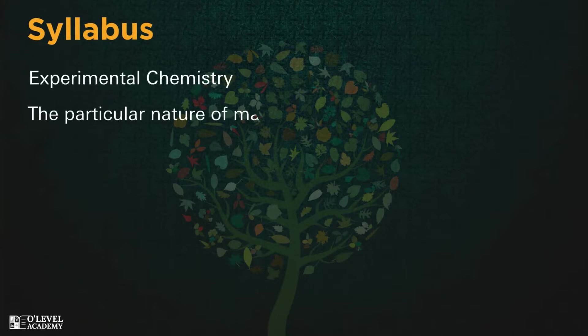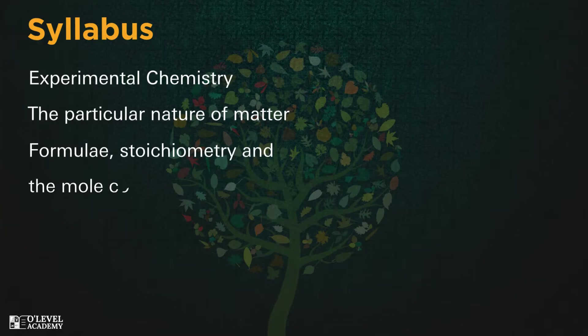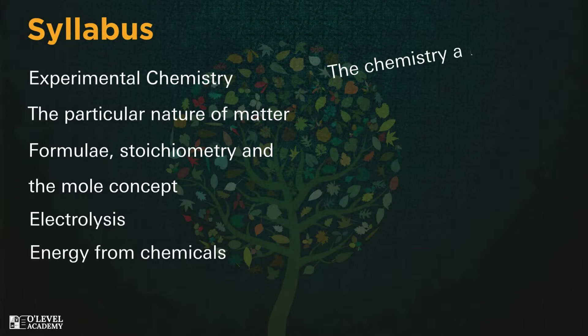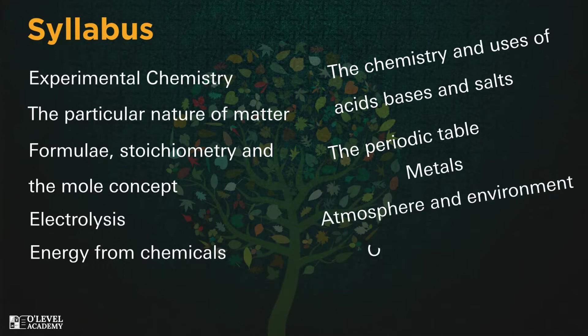Syllabus: The syllabus of O-Level Chemistry consists of the following topics - experimental chemistry, the particular nature of matter, formulae stoichiometry and the mole concept, electrolysis, energy from chemicals, chemical reactions, the chemistry and uses of acids bases and salts, the periodic table, metals, atmosphere and environment, and organic chemistry.